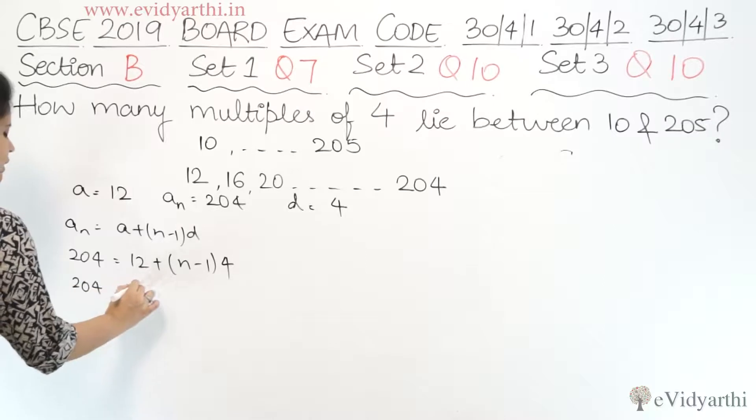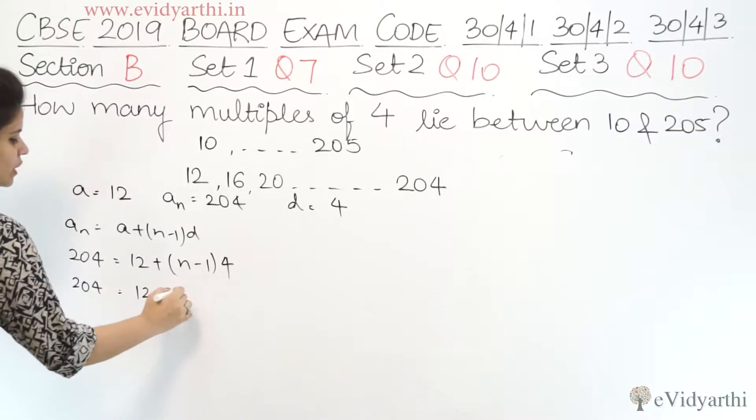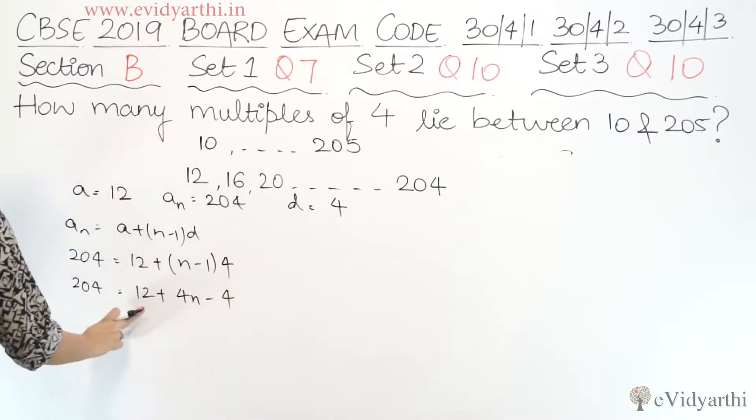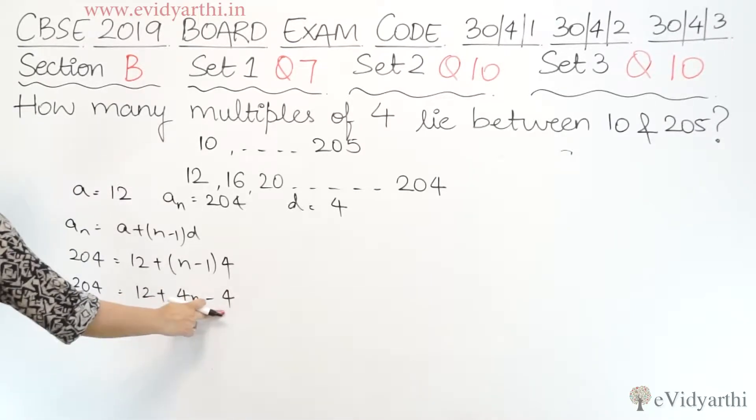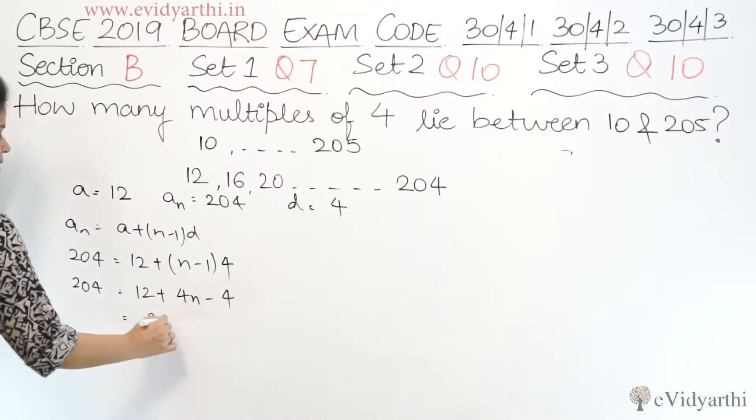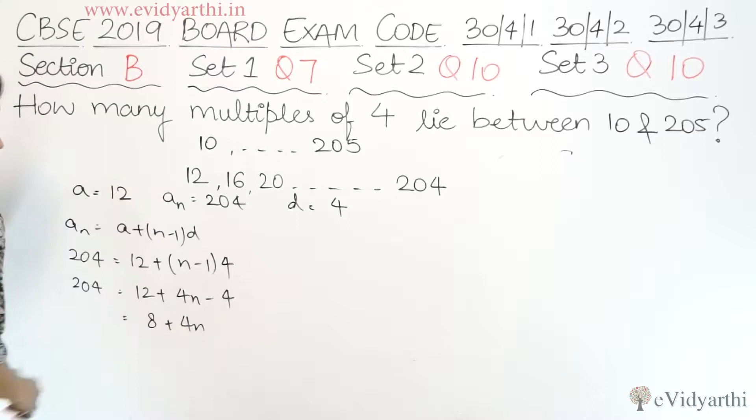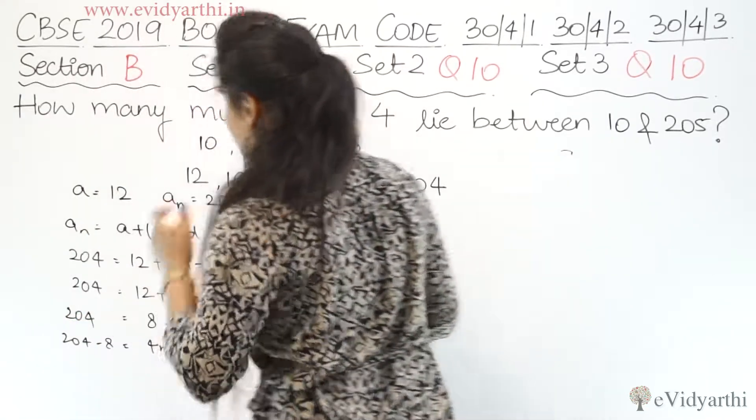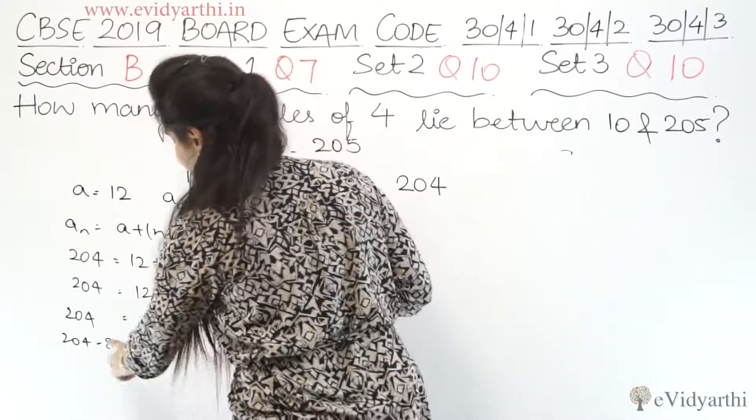Here we have 204. 12 plus, now 4 into n is 4n minus 4 into 1 is 4. So this is plus, this is minus, plus minus gives minus. 12 minus 4 gives 8 plus 4n. Now moving 8 to the other side, 204 minus 8 equals 4n.